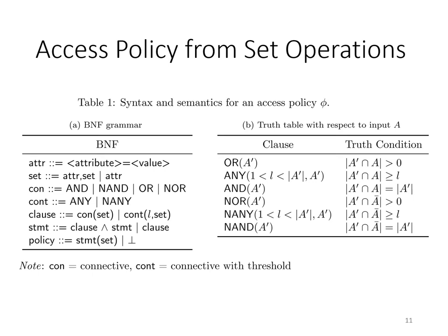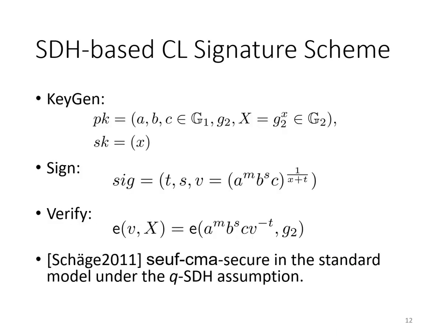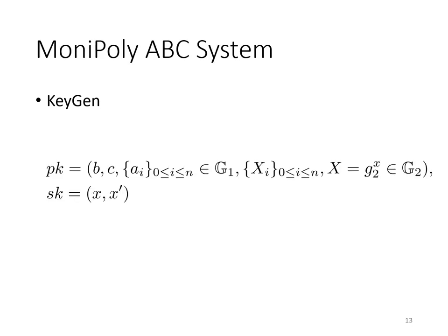Based on the set operations of the Monopoly commitment scheme, we construct the access policy for our ABC system. We view the policy as a statement that can act on a set attribute set, constructed by a single clause or a composite of clauses. Table B shows the supported clauses: ALL, OR, ANY, negated OR, negated ANY, and negated ALL. The signing algorithm in our ABC system is based on the CL signature scheme, which is proven to be strongly existential unforgeable in the standard model under the QSDH assumption. Our key generation is the combination of the SDH-based CL signature scheme and the Monopoly commitment scheme.